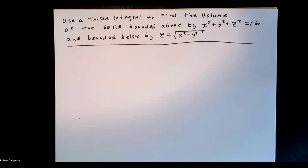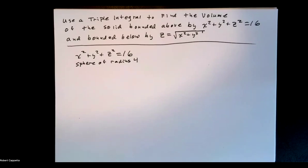So let's discuss the upper bound. What is this? Do we recognize it? X squared plus y squared plus z squared equals 16. That is a sphere of radius 4 centered at the origin.